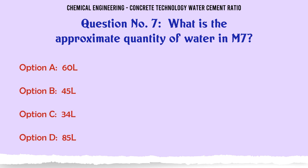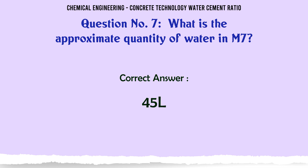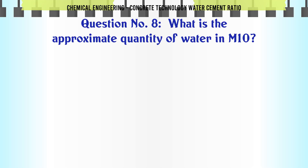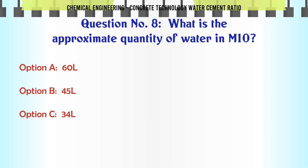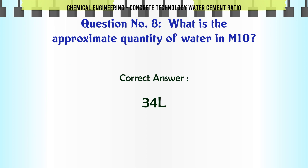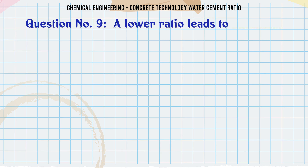What is the approximate quantity of water in M10? A. 60 L, B. 45 L, C. 34 L, D. 85 L. The correct answer is 34 L.